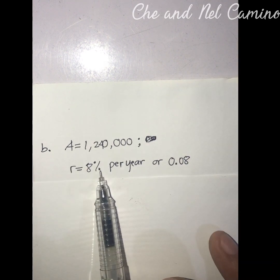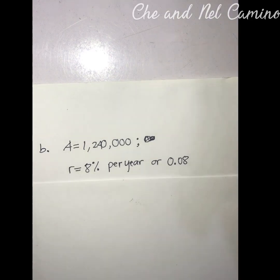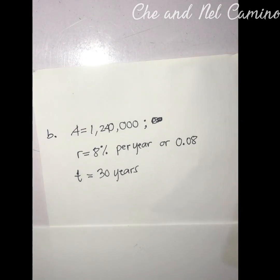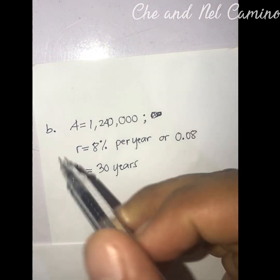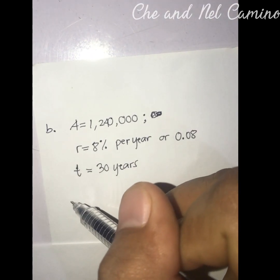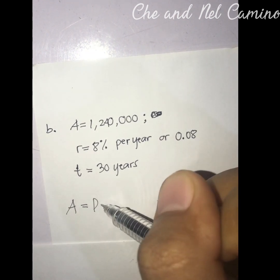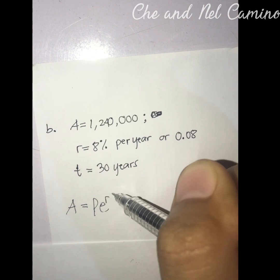Our variable r is equal to 8% per year or 0.08, then we have t equals 30 years. Again, the formula for the exponential growth problem is A equals P times e raised to the power of rt.